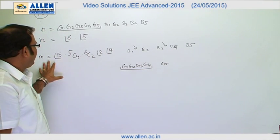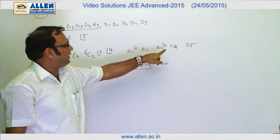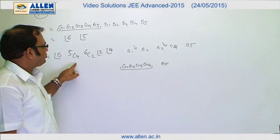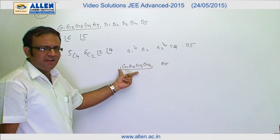So this is the counting of m. This 5 factorial is for the arrangement of 5 boys. 5C4 stands for choosing 4 girls out of the 5. One remains.